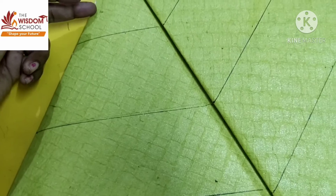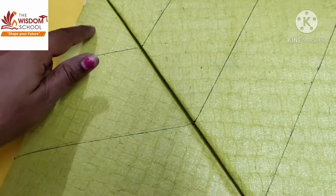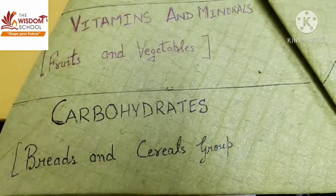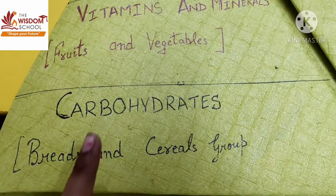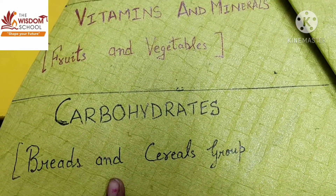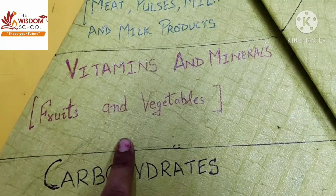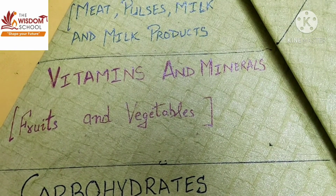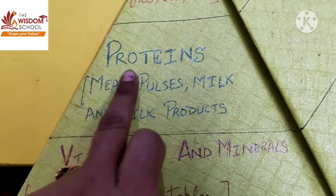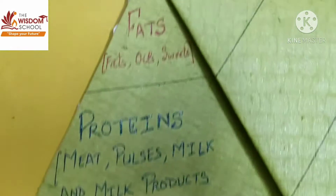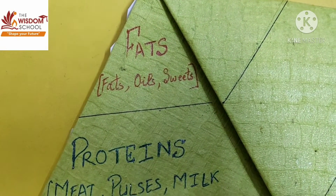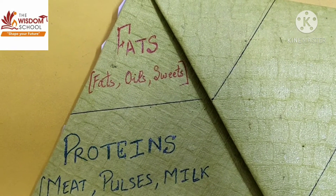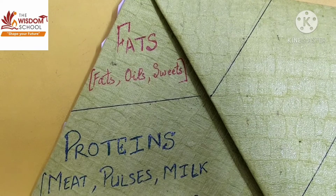Proteins come next, and the topmost part is related to fats. Let us write down: the bottom section is carbohydrates, the second section is vitamins and minerals from fruits and vegetables, then proteins, and the topmost part is fats. For reference, you can also go through page number 53 of your book.